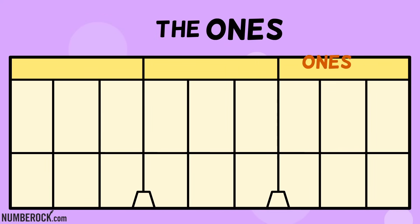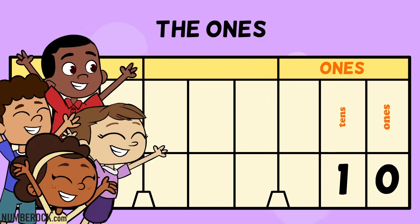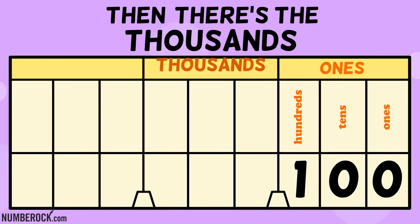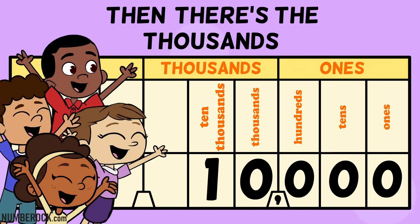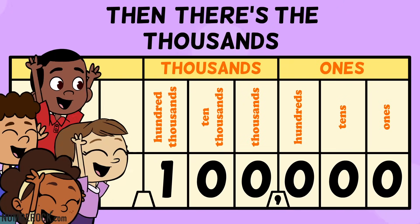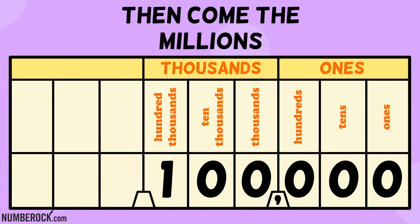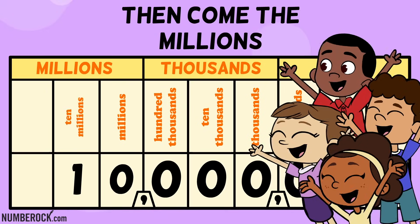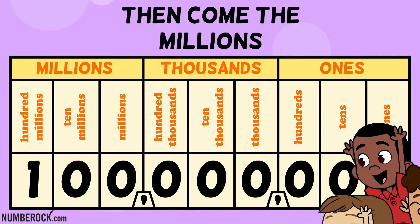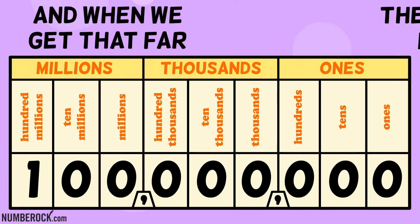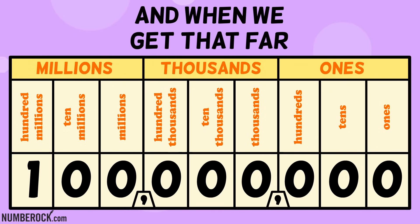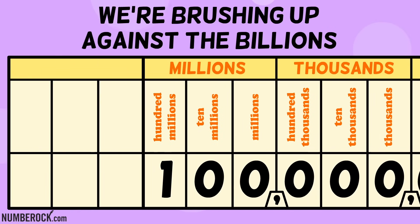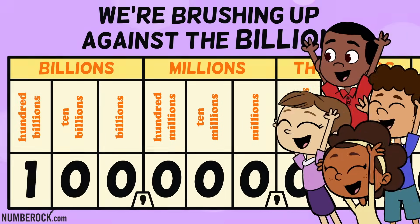The ones: ones, tens, hundreds. Then there's the thousands: one thousands, ten thousands, hundred thousands. Then come the millions: one millions, ten millions, hundred millions. And when we get that far, we're brushing up against the billions.